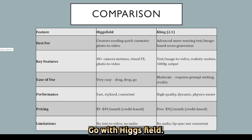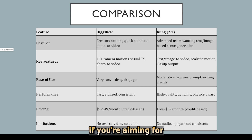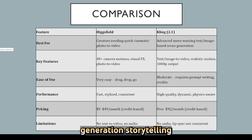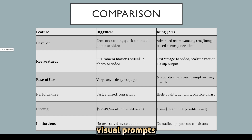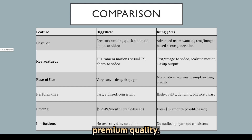Here's the verdict. Go with Higgsfield if you're a content creator or marketer who wants beautiful motion with zero prompt writing. If you're aiming for full-scene generation, storytelling, or complex visual prompts, Kling gives you that power. Just expect a steeper curve and higher cost at premium quality.